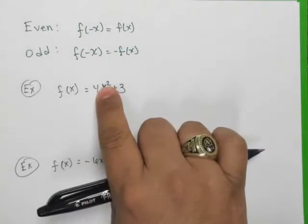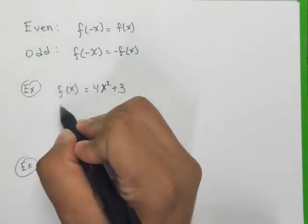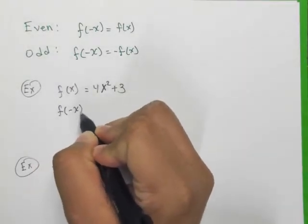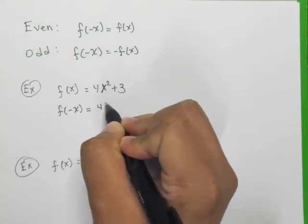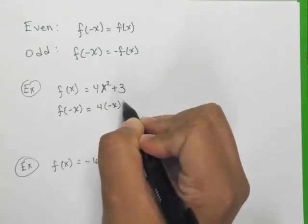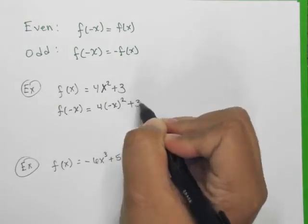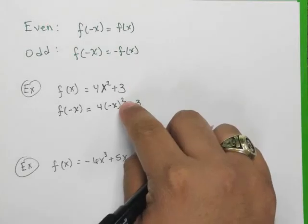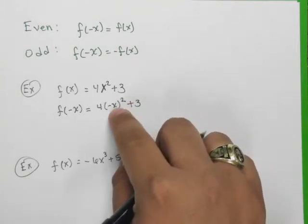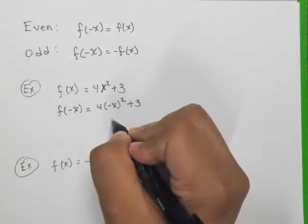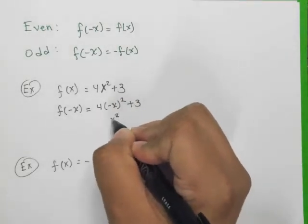So let's take a look at this example first. What I'm going to do here is I'm going to plug in negative x, and then I'm going to evaluate it. So I have 4 times negative x quantity squared plus 3. Negative x squared here is just a positive x squared by the order of operations.